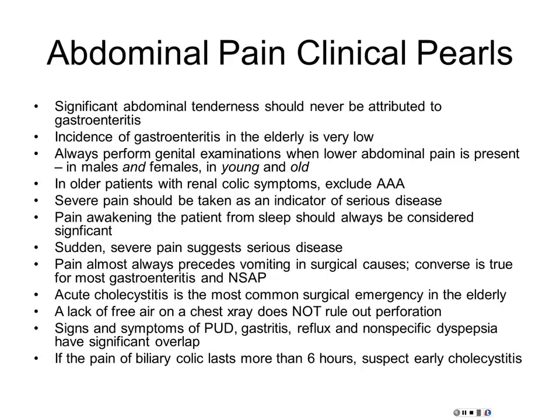Q&A on toxic megacolon: the traditional radiographic cutoff is 9 or 10 centimeters. You can have a megacolon and not be toxic, and you can have toxic colitis and not have a megacolon. The traditional definition of toxic megacolon is someone with an extremely distended colon, leukocytosis, and a fever. But there are people with fulminant colitis who have a normal-sized colon — I have one on my service right now with horrible fulminant colitis, horribly thickened colon on CT scan.